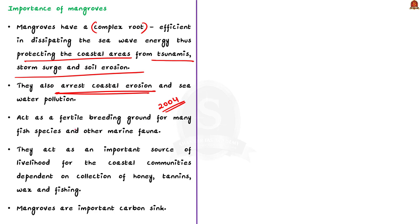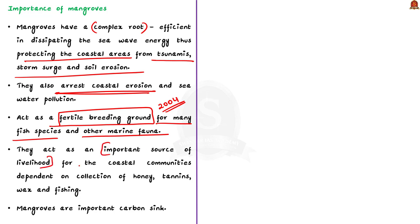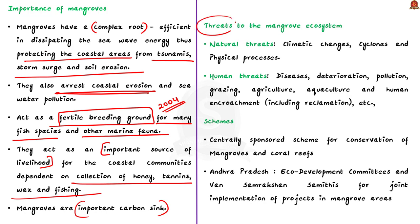Mangroves also act as a fertile breeding ground for many fish species and other marine fauna. They are significant economically, acting as an important source of livelihood for coastal communities who depend on mangroves for collection of honey, tannins, wax and fish. They also act as important carbon sinks. However, this important ecosystem is now being threatened. The threats to the mangrove ecosystem can be broadly classified into two groups: natural and anthropogenic.